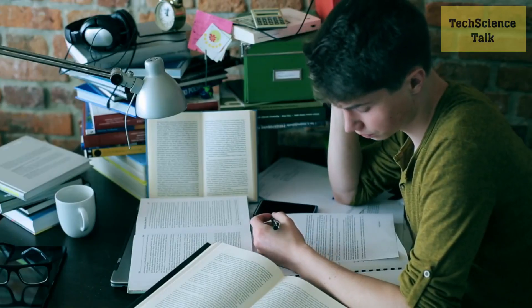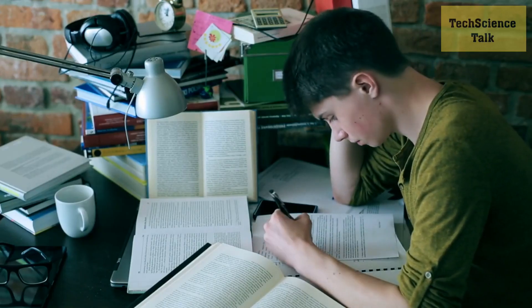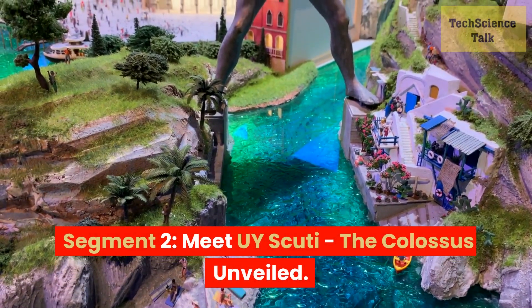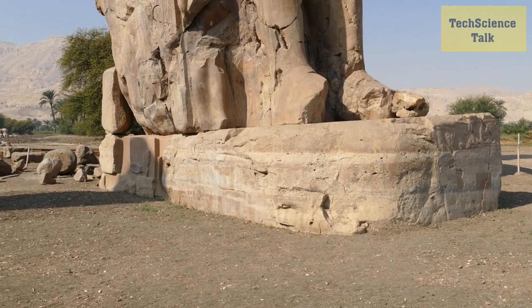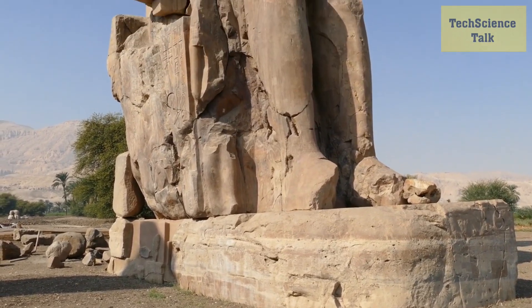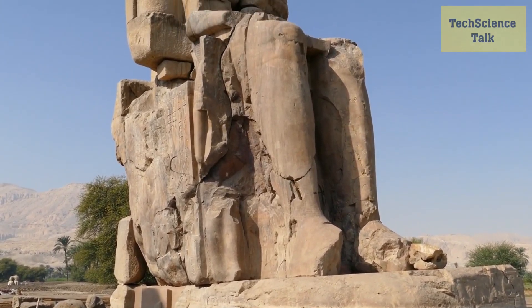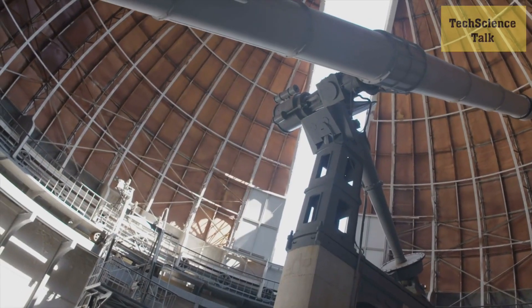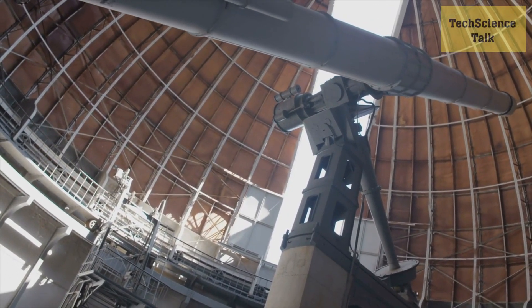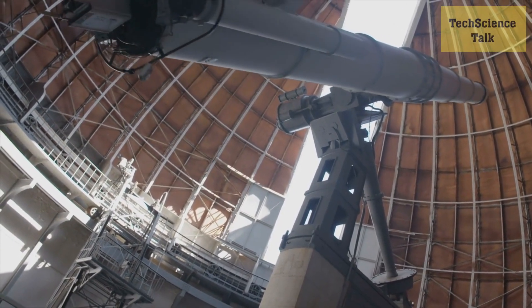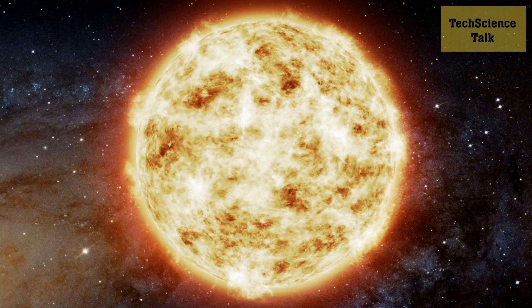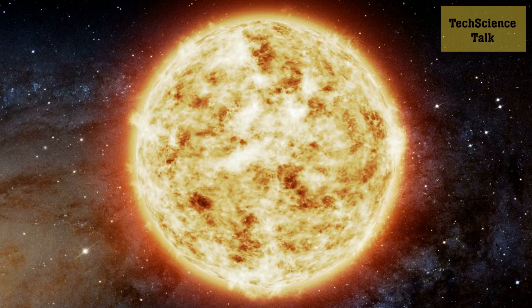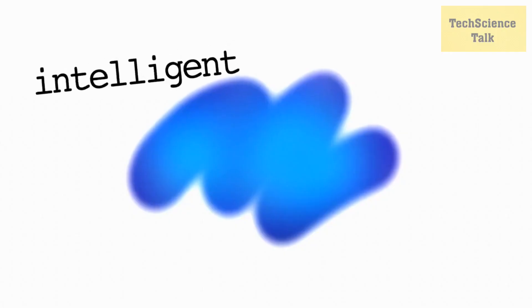Segment 2: Meet UY Scuti - The Colossus Unveiled. In this segment, we delve into the star that holds the title of the largest known star in the universe: UY Scuti, located in the constellation Scutum. This massive star has captured the attention of astronomers and stargazers alike. With a radius of over 1700 times that of our sun, UY Scuti is truly a cosmic colossus.